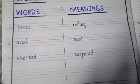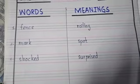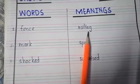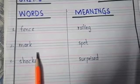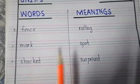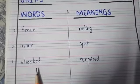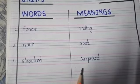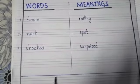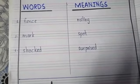I am going to repeat the words again. First word is fence. Fence means railing. Second word is mark. Mark means spot. Third word is shocked. Shocked means surprised. And at the end you have to draw an ending line.